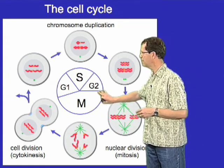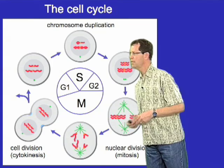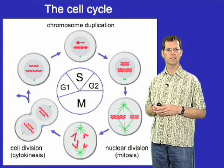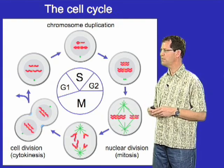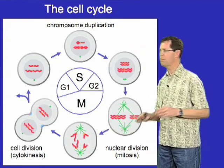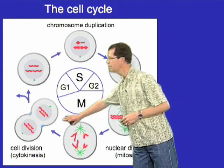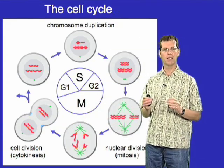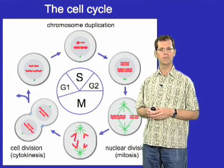M phase is a particularly spectacular phase of the cell cycle, typically defined as involving two distinct events: mitosis and cytokinesis. Mitosis is the process by which the chromosomes are segregated and packaged into individual nuclei, and then cytokinesis is the process by which those daughter nuclei are distributed by cell division into a pair of genetically identical daughter cells.